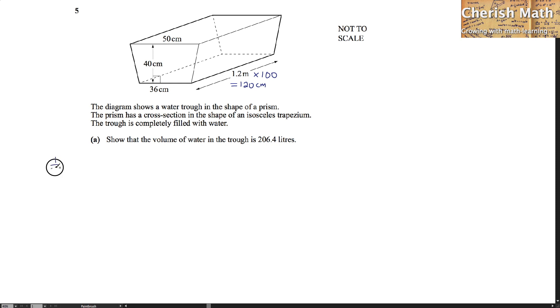Now here it goes. We are using one half multiplied by 36 plus 50 and multiply the height of the trough which is 40. This is the area of the trapezium.